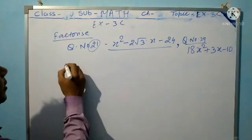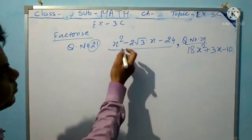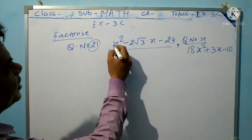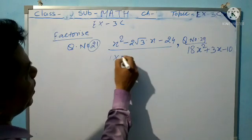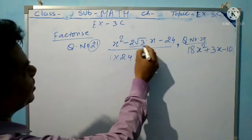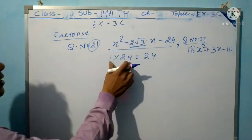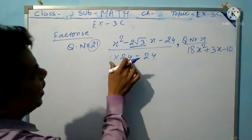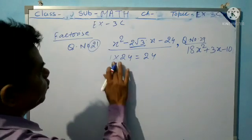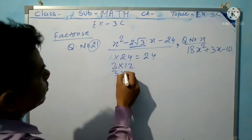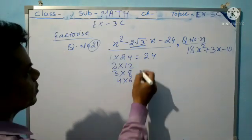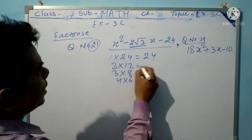Question number 21: the first term and last term are multiplied, that is 24. We need numbers that add and subtract to get 2√3. The factors of 24 are: 2 into 12, 3 into 8, 4 into 6.